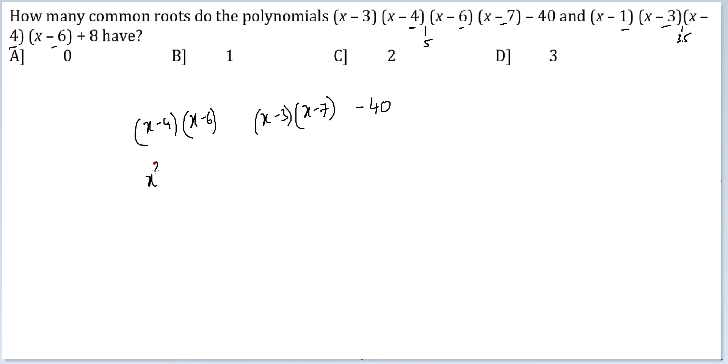Here I will get x square minus 10x plus 24. And here I will get x square minus 10x plus 21 minus 40. So I can take x square minus 10x to be equal to a. So I get (a + 24) into (a + 21 - 40).